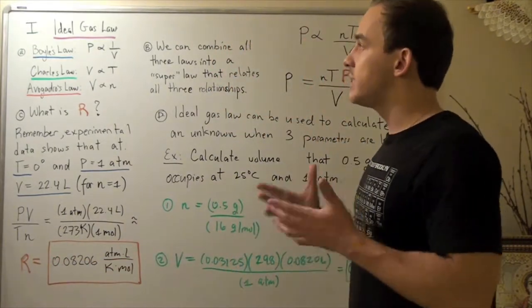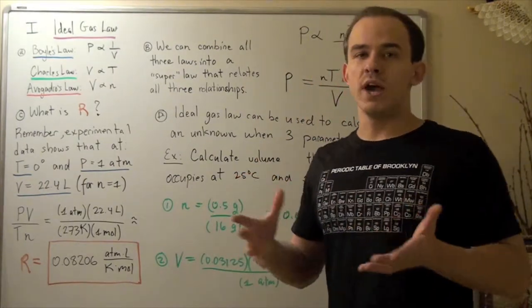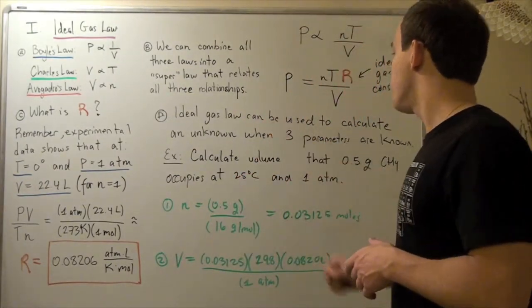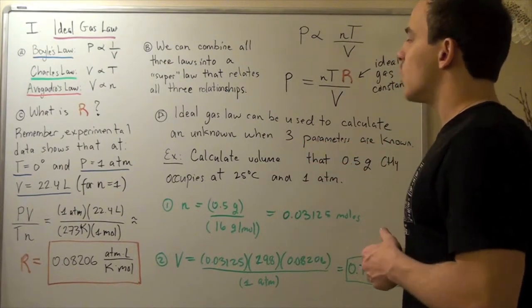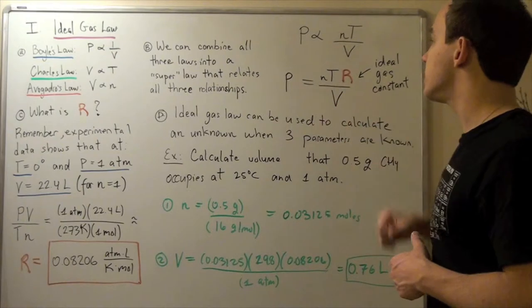So the question is, how does an ideal gas law help us? Well it helps us in the following way. If we know three parameters, we can find the final unknown. That's exactly what this formula tells us.